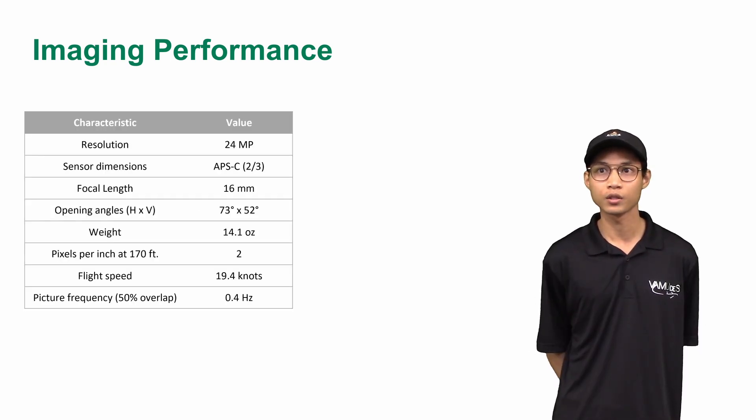With a 24 megapixel camera, it gives a resolution of 2 pixels per inch. At 19.4 knots, we get 50% image overlap. This is enough to identify correctly targets.